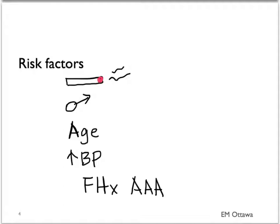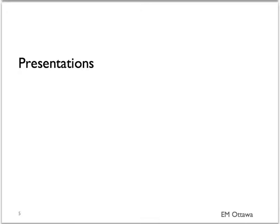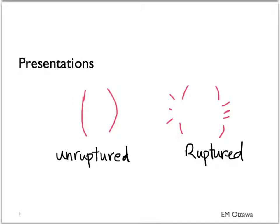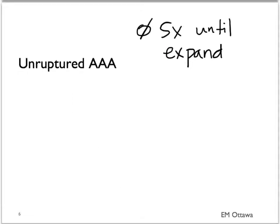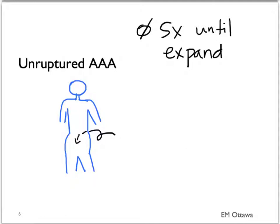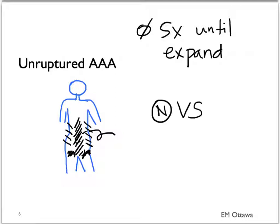The presentation of AAA can be divided into unruptured and ruptured AAA. Unruptured AAA is usually asymptomatic until they expand. When they do, the patient usually complains of pain — typically in their back, flank, and abdomen, sometimes radiating to the groin. On examination, the patient's vital signs should be normal, and you might be able to palpate a pulsatile mass in the abdomen.